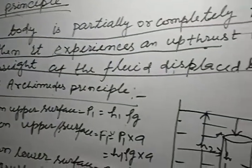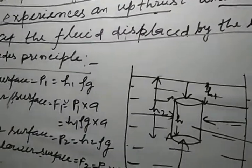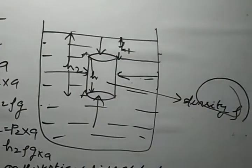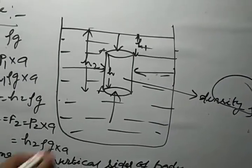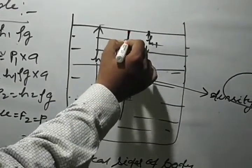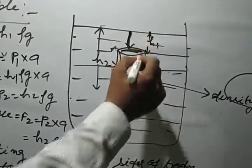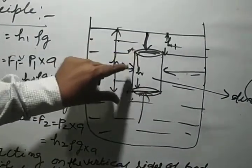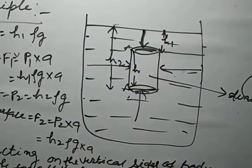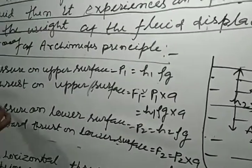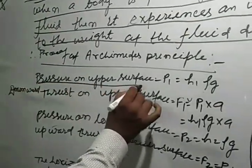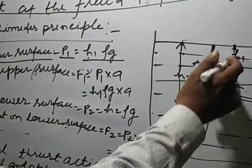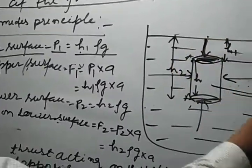Let us prove Archimedes' principle. Consider a cylindrical body of cross-sectional area A submerged in a liquid of density rho. Let the upper face of the body be at depth H1 and the lower face at depth H2. The height of the object is therefore H2 minus H1.